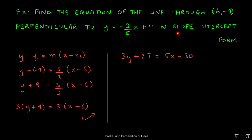Remember we're looking for the line to be in slope-intercept form, so we need to isolate the y. So at this stage we can subtract the 27 over to the other side. That will give us 3y = 5x - 30 - 27.